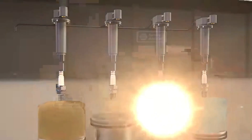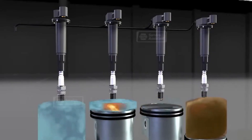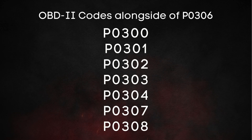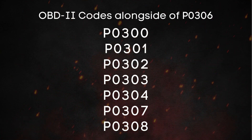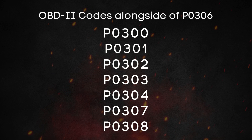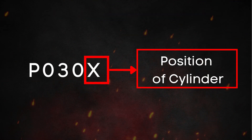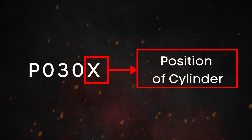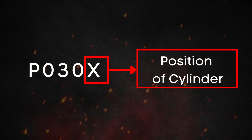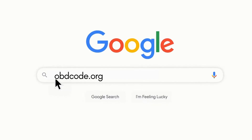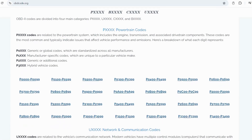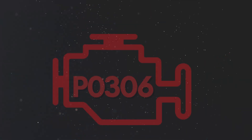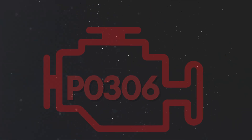A misfire means that the combustion process inside one or more cylinders isn't happening properly. You may also find another OBD-II code like P0301 to P0308 alongside P0300. The last number in these accompanying codes refers to the affected cylinder. If you want to know more about what these codes mean, visit our website obdcode.org for a detailed explanation. Now let's dive into why P0306 gets triggered.